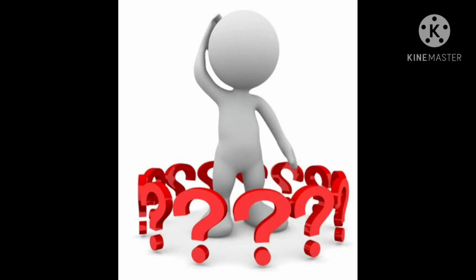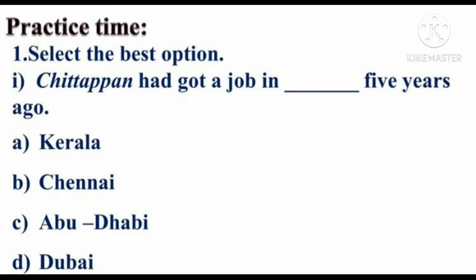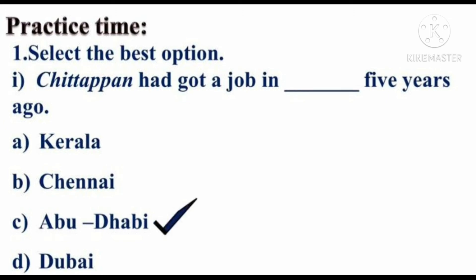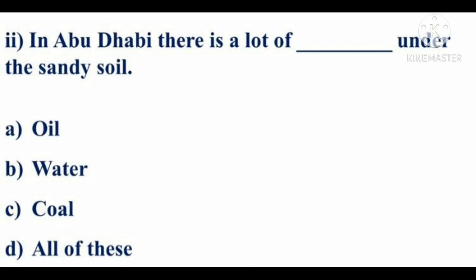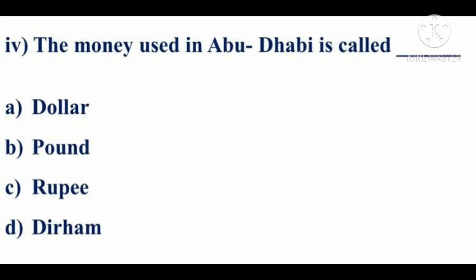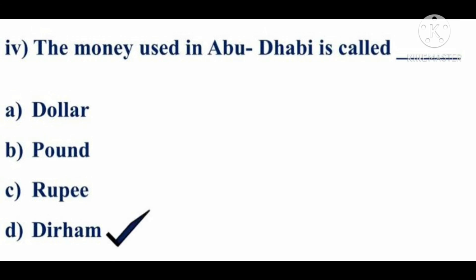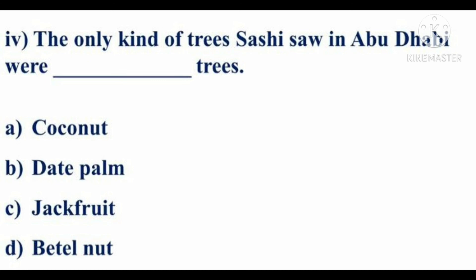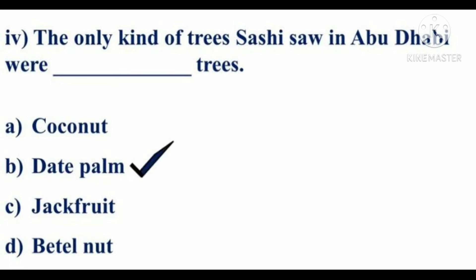Now students, it's a question round. I will ask the question and you have to give the answer. Chithappan got a job in Abu Dhabi five years ago. In Abu Dhabi, there is a lot of oil under the sandy soil. The money used in Abu Dhabi is called dirham. The only kind of trees Shanta saw in Abu Dhabi were date palm trees.